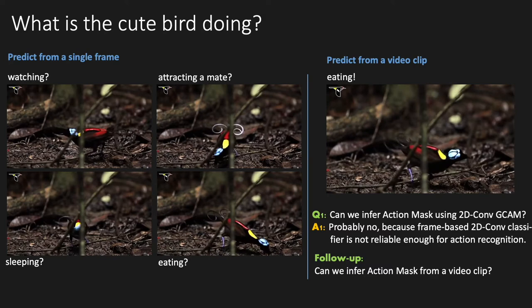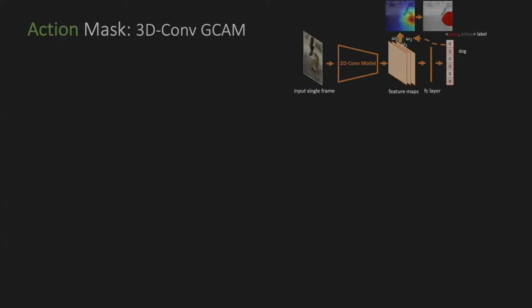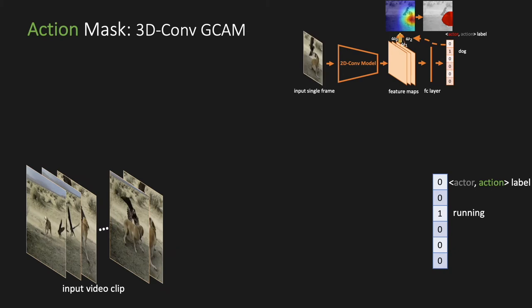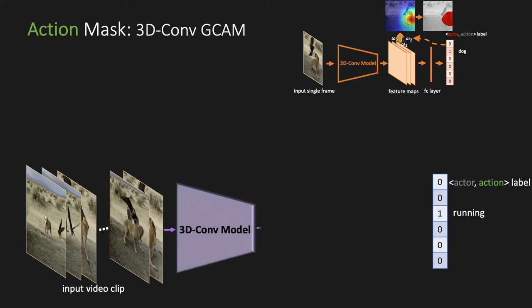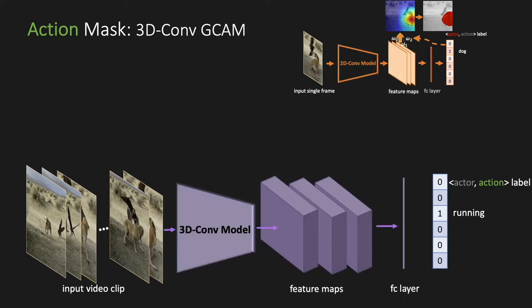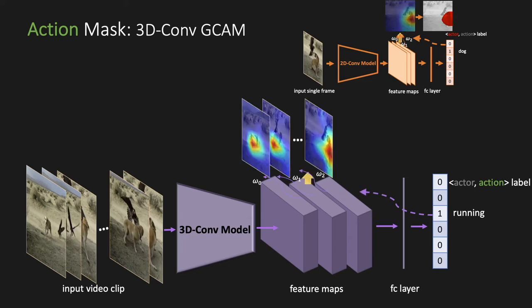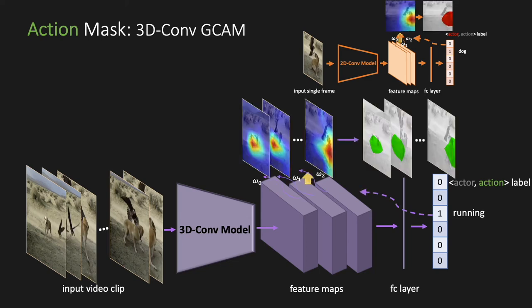Then you may ask: can we infer an action mask from a video clip? Absolutely. Motivated by the success of 3D convolutions in action recognition, we extend 2D Comb GCN to 3D Comb GCN for action mask generation. A 3D convolutional model like I3D consumes a video clip as input, and then a series of action heat maps are produced from the weighted average of the feature maps in the last convolutional layer.